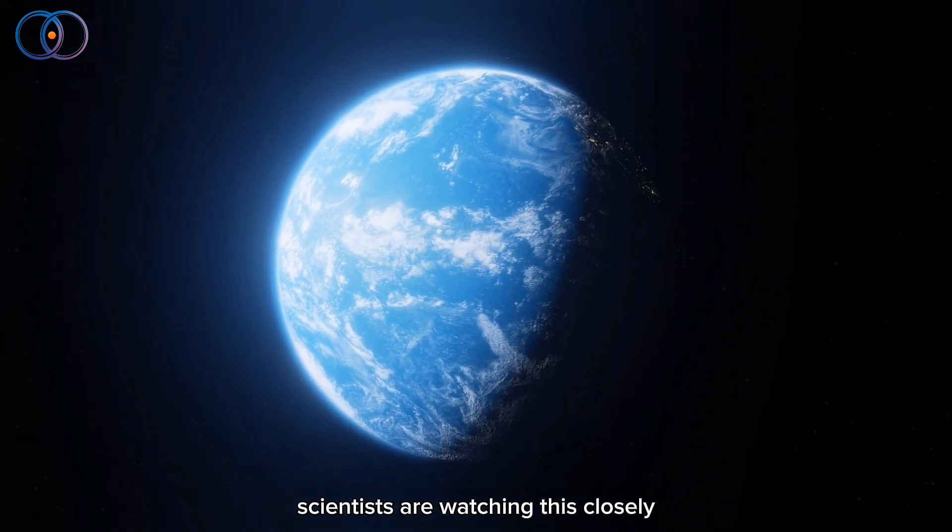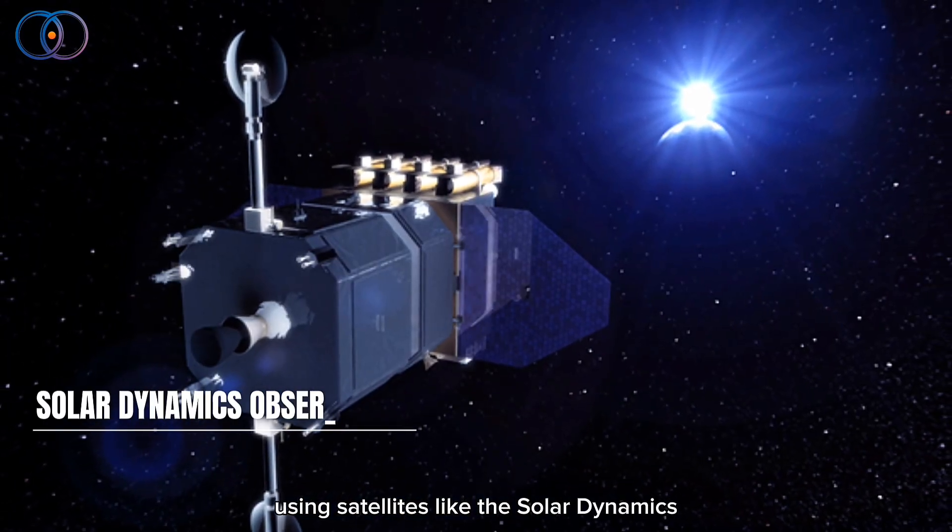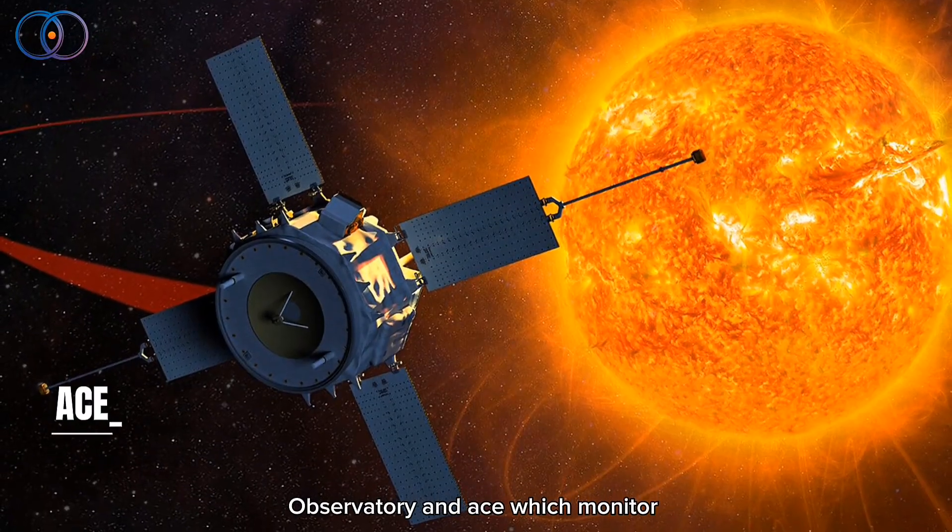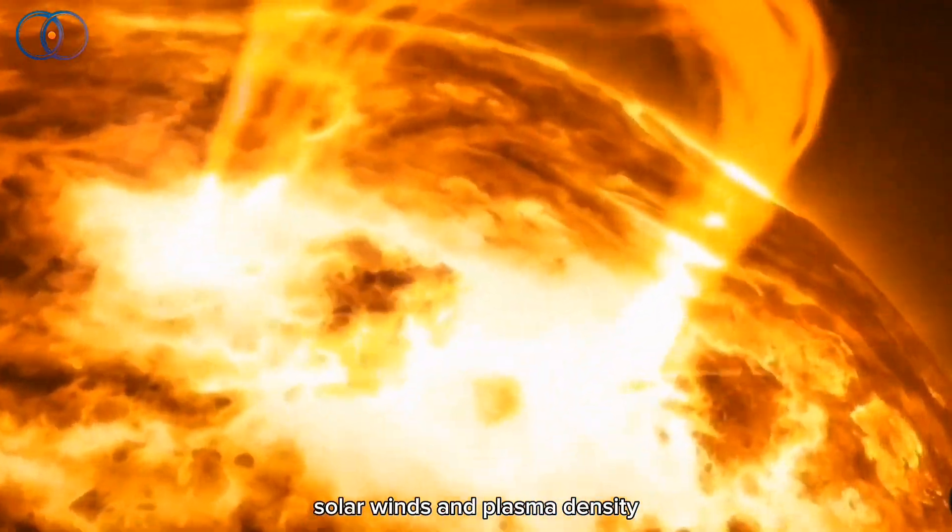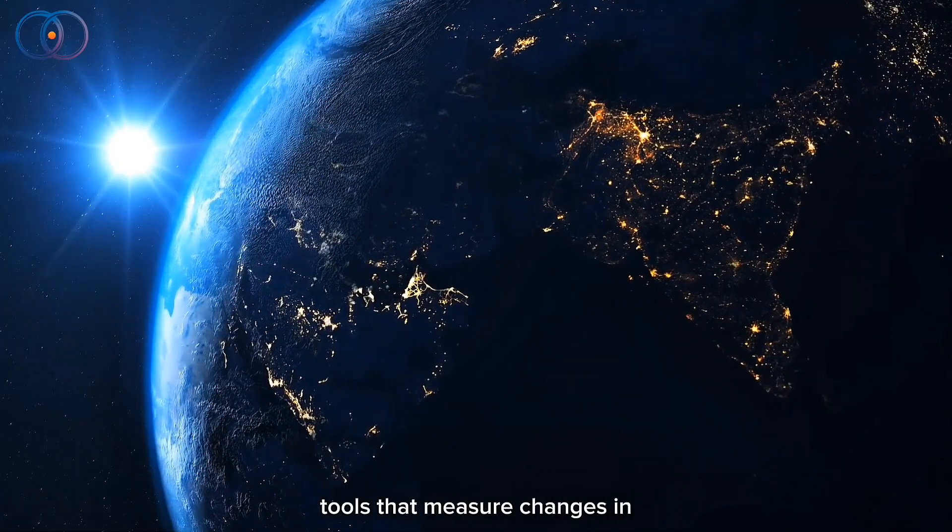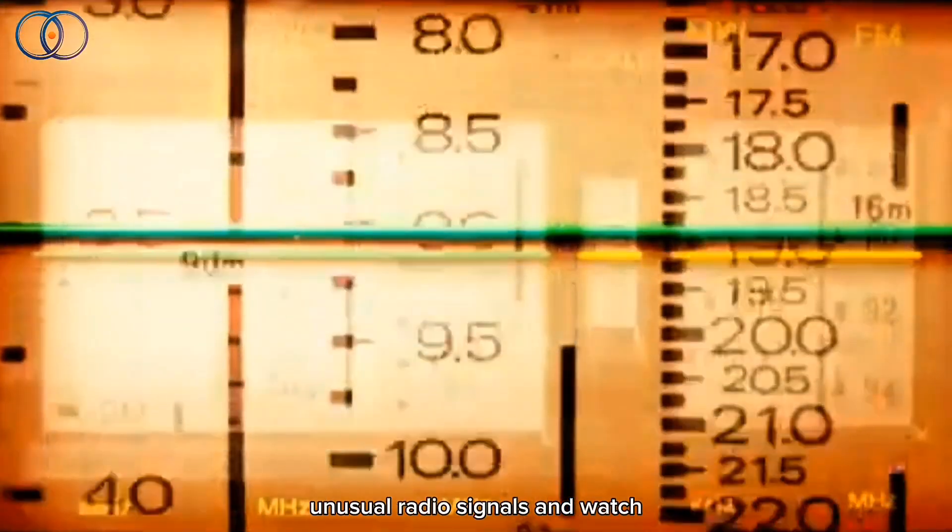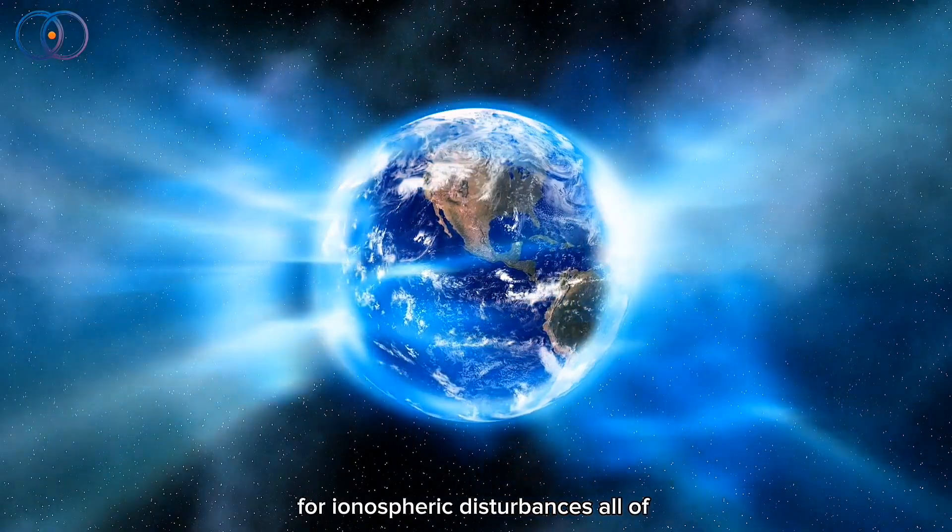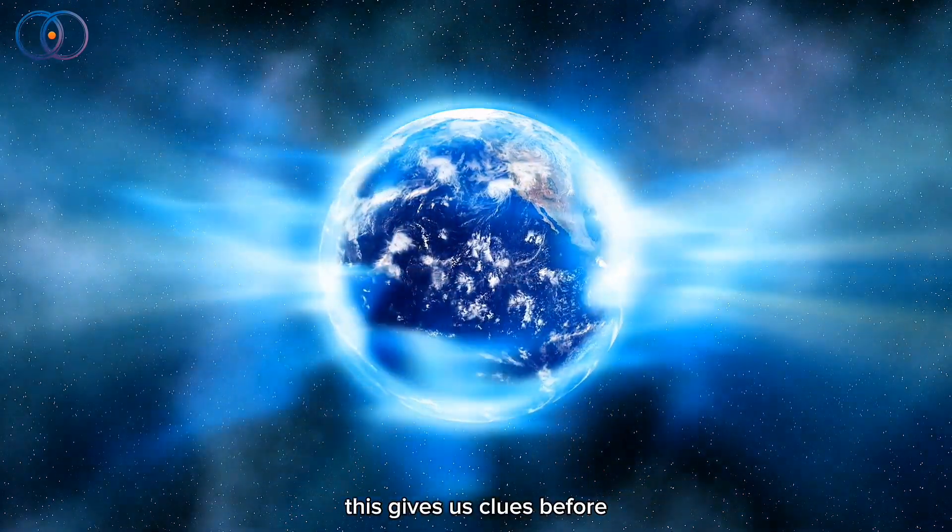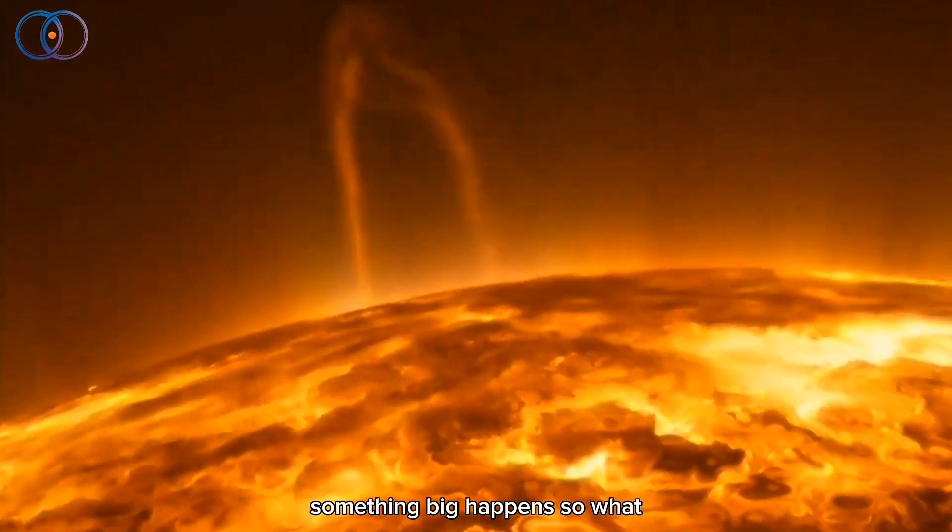Scientists are watching this closely using satellites like the Solar Dynamics Observatory and ACE, which monitor solar winds and plasma density. There are also ground-based tools that measure changes in the Earth's magnetic field, track unusual radio signals, and watch for ionospheric disturbances. All of this gives us clues before something big happens.